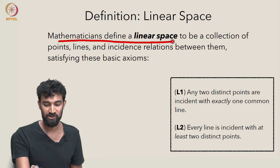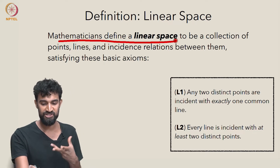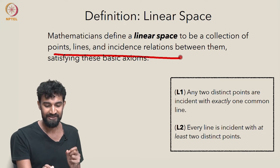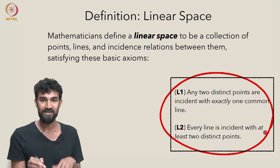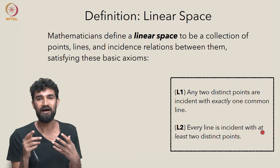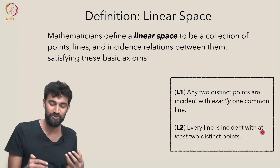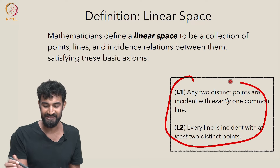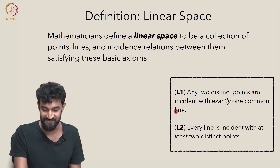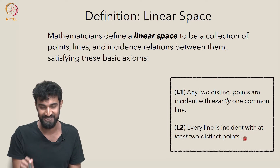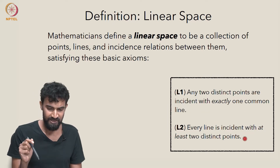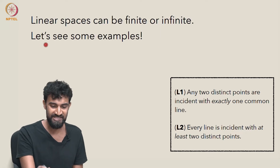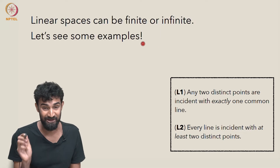Mathematicians define something called a linear space, which is just a collection of points, lines, and incidence relations that satisfy these two axioms. It's the most basic entity you could create consisting of points and lines that has some interest because it satisfies these most fundamental axioms. Linear spaces can be finite or infinite, so let's see some examples to get a better sense of what they are.